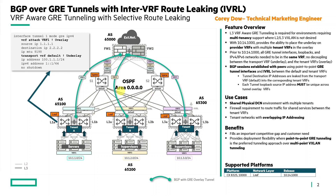The default VRF provides the underlay for the shared infrastructure, just like it would in the VXLAN architecture. There are point-to-point peerings with each of the leaf nodes and the corresponding spine nodes. The loopbacks — for example, source IP 1.1.1.1 and destination IP 2.2.2.2 for leaf 1 — are distributed in the underlay using OSPF. The transport VRF identifies the egress point for the tunnel within the tunnel configuration, and the destination loopbacks are leaked using IVRL from the default VRF to the tenant VRFs dynamically using route target imports and exports.